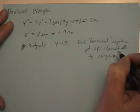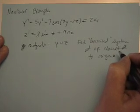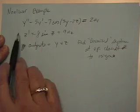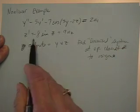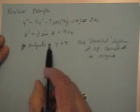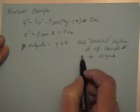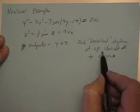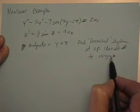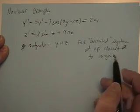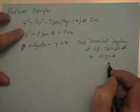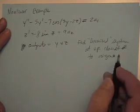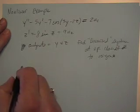Let's work on an example of a nonlinear problem and linearize it. Let's say we have a couple of differential equations in y and z, and we want to find the linearized system at the equilibrium point that's closest to the origin — the one that gives us the smallest values of the states. First, let's put this in state-space form.